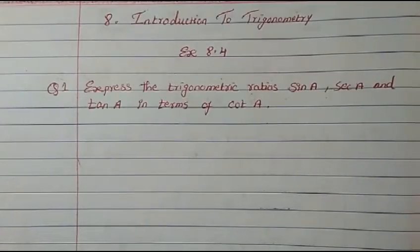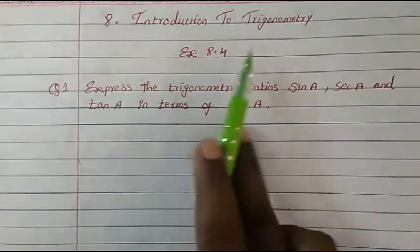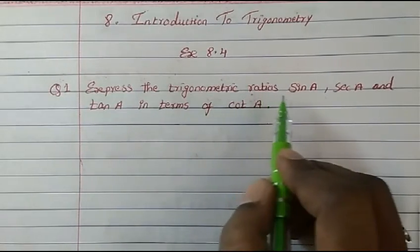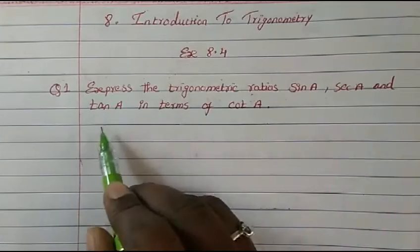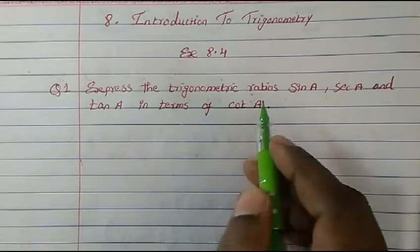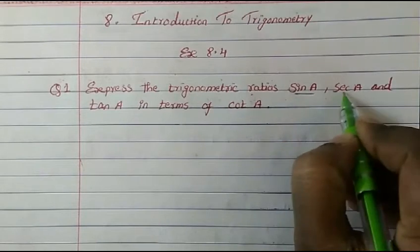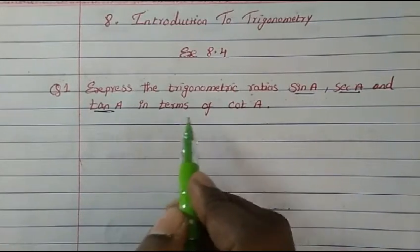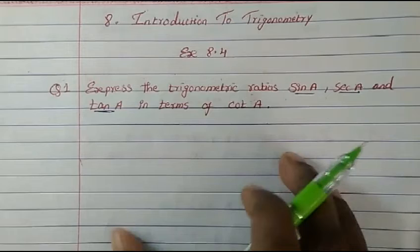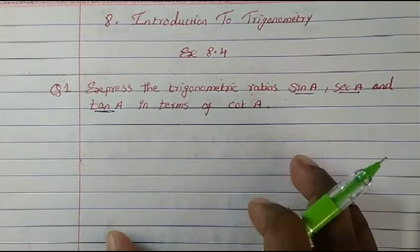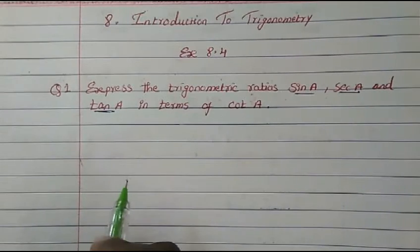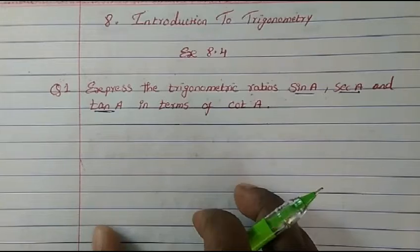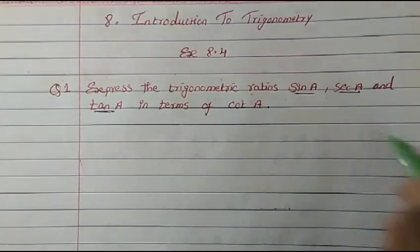Hi everyone, welcome to Mash Mat. Today we are going to study Chapter 8, Introduction to Trigonometry, Exercise 8.4, Question 1: express the trigonometric ratios sine A, sec A, and tan A in terms of cot A. So all three we have to express in terms of cot A. There are two methods; I'll show you both. The first method I'm going to show you is very easy — that is completing the triangle.